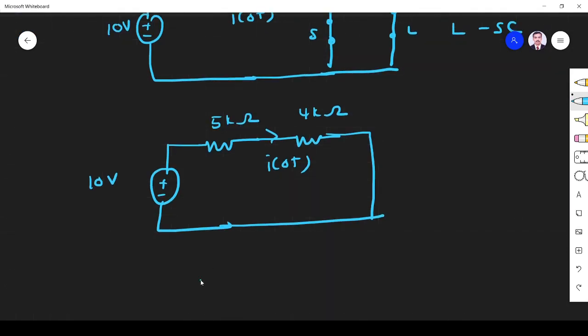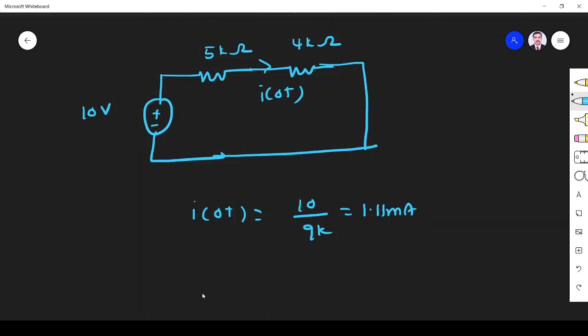i = V/R, where V is 10 volts and R is the total resistance: 5 + 4 = 9 kilo ohms. So i = 10/9 = 1.11 milliamperes. The current through the 4 kilo ohm resistor at t = 0+ is 1.11 milliamperes. Thank you.